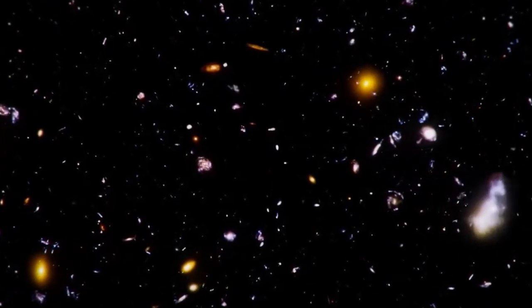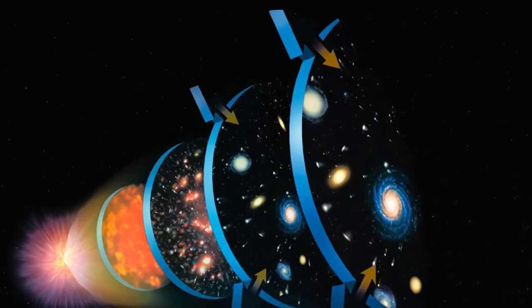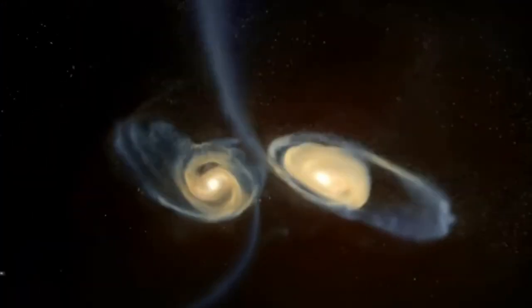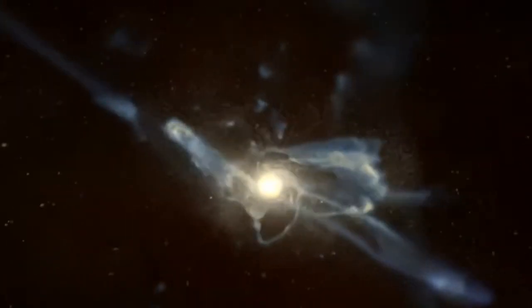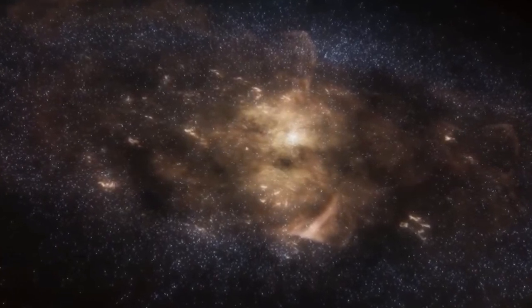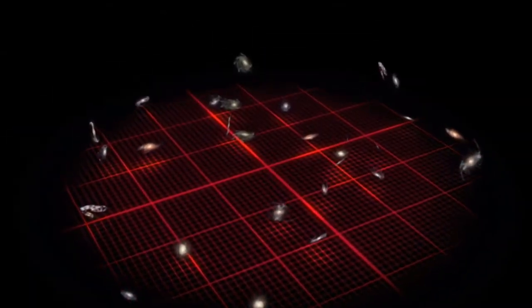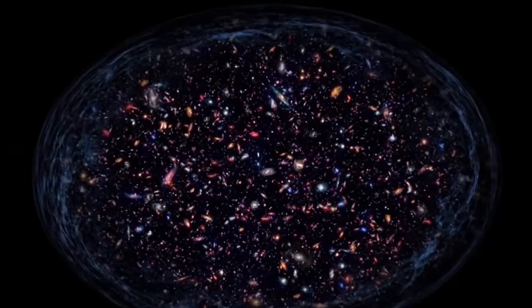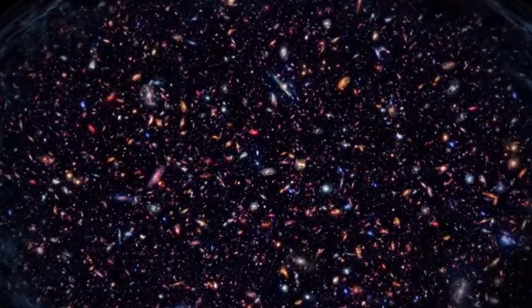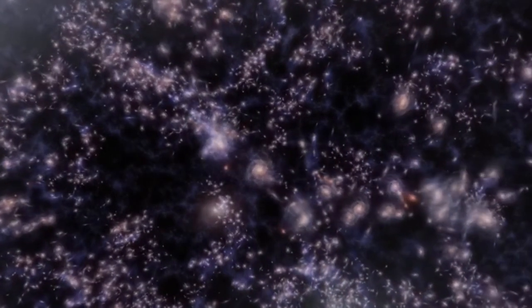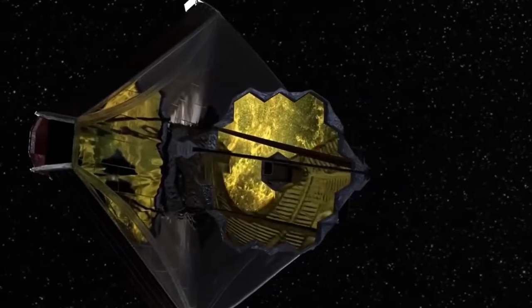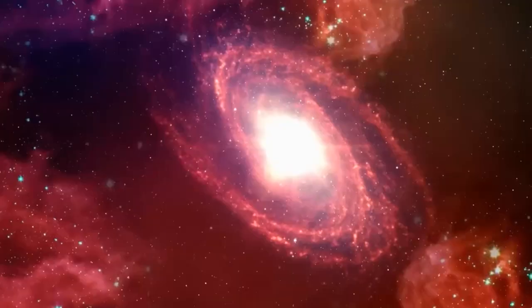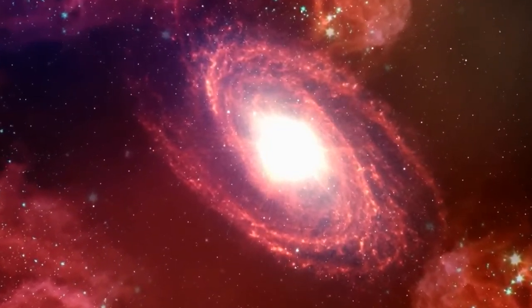The redshift of light from distant galaxies is another key piece of evidence supporting the Big Bang theory. The redshift occurs because the galaxies are moving away from us, and as they do, the wavelength of the light they emit gets longer, causing it to shift toward the red end of the spectrum. This is similar to the sound of a siren on a moving ambulance, which gets lower in pitch as it moves away from you. The Big Bang theory explains this observation by stating that the universe is expanding and that all galaxies are moving away from each other. As the universe expands, the wavelength of lights from distant galaxies gets stretched, causing it to shift toward the red end of the spectrum. This is known as the cosmological redshift.